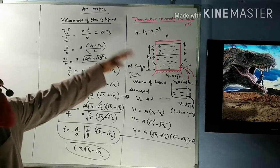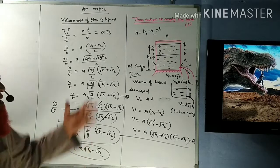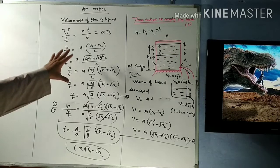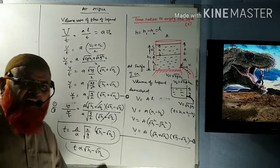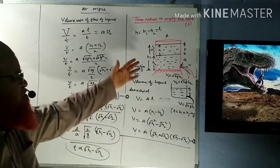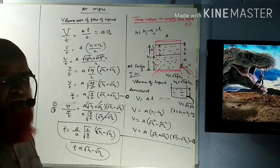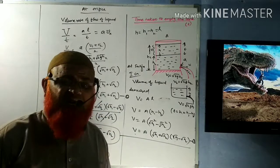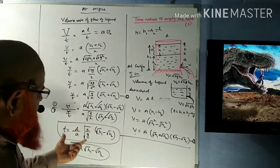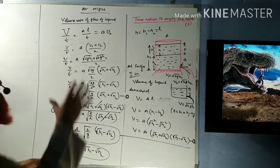Time taken by the liquid to empty is directly proportional to the difference of square roots of heights. This is one of the most commonly asked and difficult concepts, since in most books the derivation is given only using integration and differentiation, which is very difficult for many students to follow. This is a simple derivation.